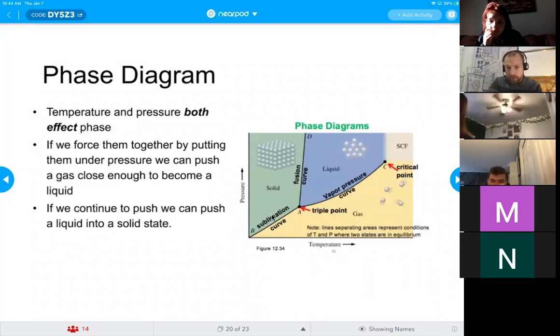One atmosphere. As we increase the temperature, it will go straight from solid into gaseous state, and we call that process sublimation.